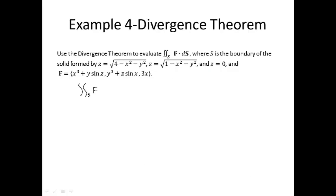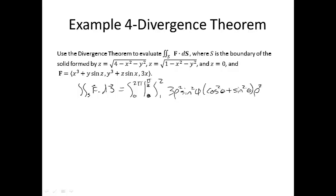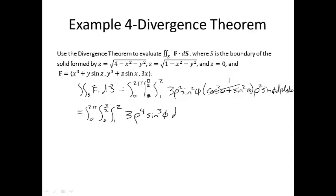So our surface integral is the integral from 0 to 2π, the integral from 0 to π/2, the integral from 1 to 2 of 3ρ² sin²φ (cos²θ + sin²θ) times ρ² sin φ dρ dφ dθ. Since cos²θ + sin²θ = 1, this simplifies to the triple integral of 3ρ⁴ sin³φ dρ dφ dθ.